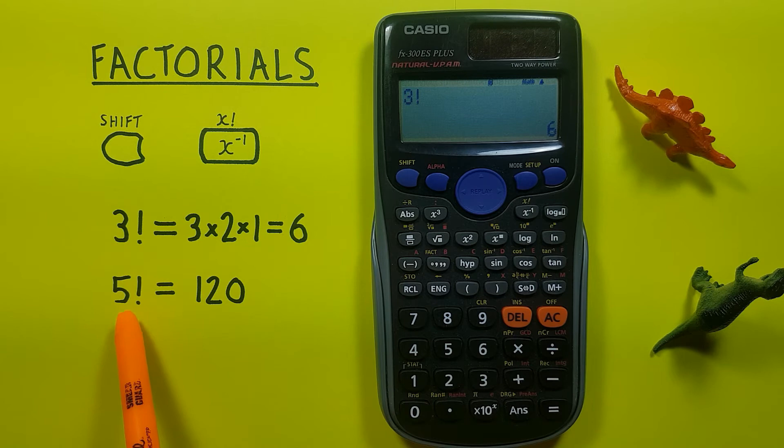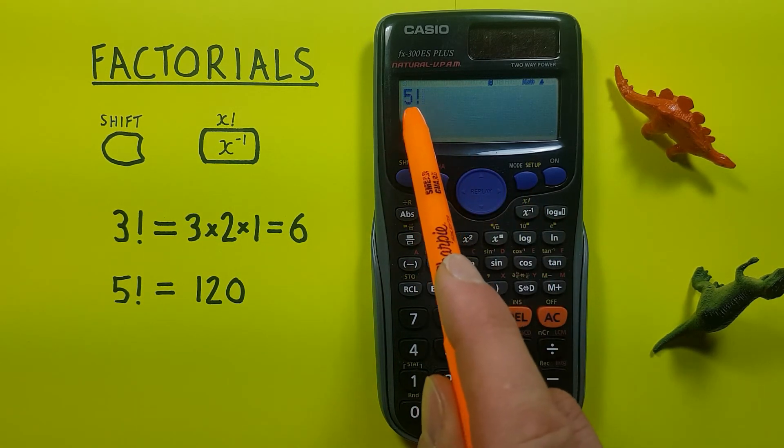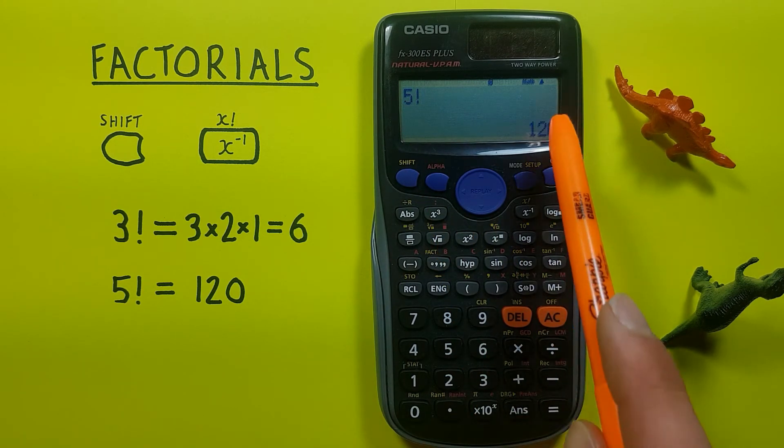Another example is 5 factorial, so 5, shift, factorial, there we go, equals 120.